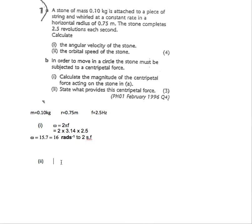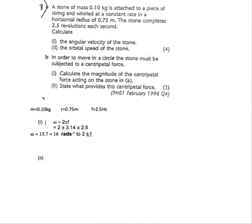Then part two, the orbital speed of the stone. So part A2 then. We know that v equals r omega. That's going to be our connection between the linear speed v and the angular speed omega.